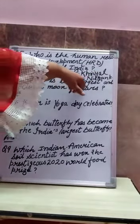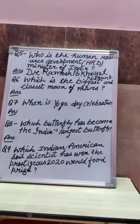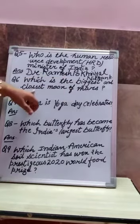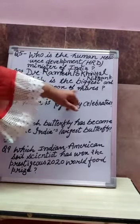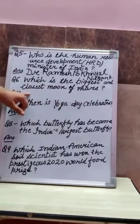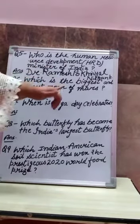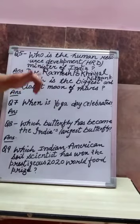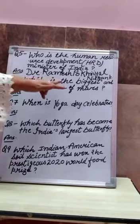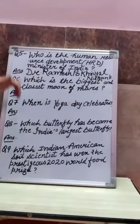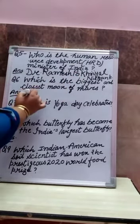Question number six: Which is the biggest and closest moon of Mars? Your answer is Phobos.